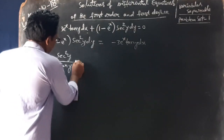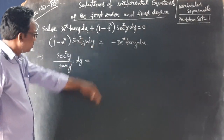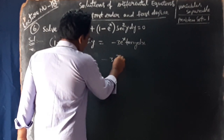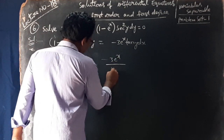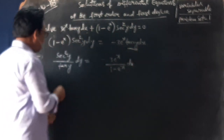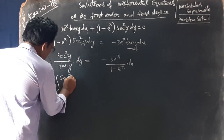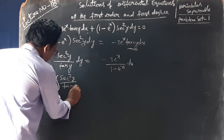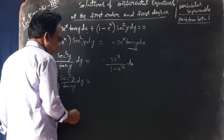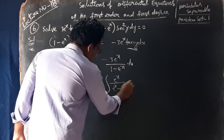This implies: secant square y by tan y dy equals y functions on left side, x functions on right side — minus 3 e power x by 1 minus e power x dx. Integrating both sides: integral of secant square y by tan y dy equals 3 into integral of e power x by e power x minus 1 dx.